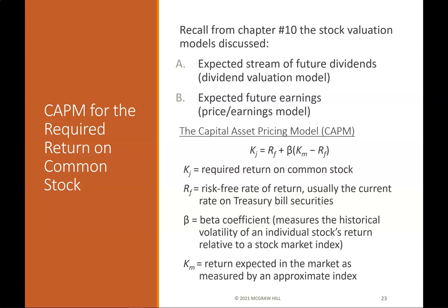Capital asset pricing model (CAPM) for the required return on common stock: The CAPM formula is KJ = RF + β × (KM − RF), where KJ is the required return on common stock, RF is the risk-free rate of return (usually the current rate on treasury bill securities), β is the beta coefficient measuring historical volatility of an individual stock's return relative to a stock market index, and KM is the return expected in the market as measured by an approximate index.